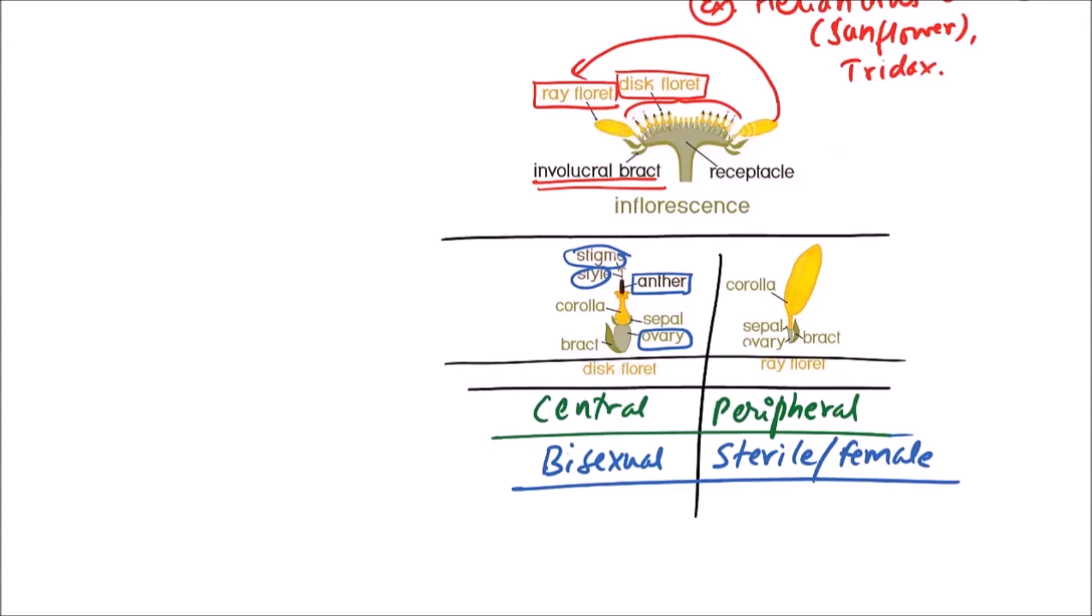Next is appearance. These appear to be tubular while these appear to be ligulate because they are associated with corolla.